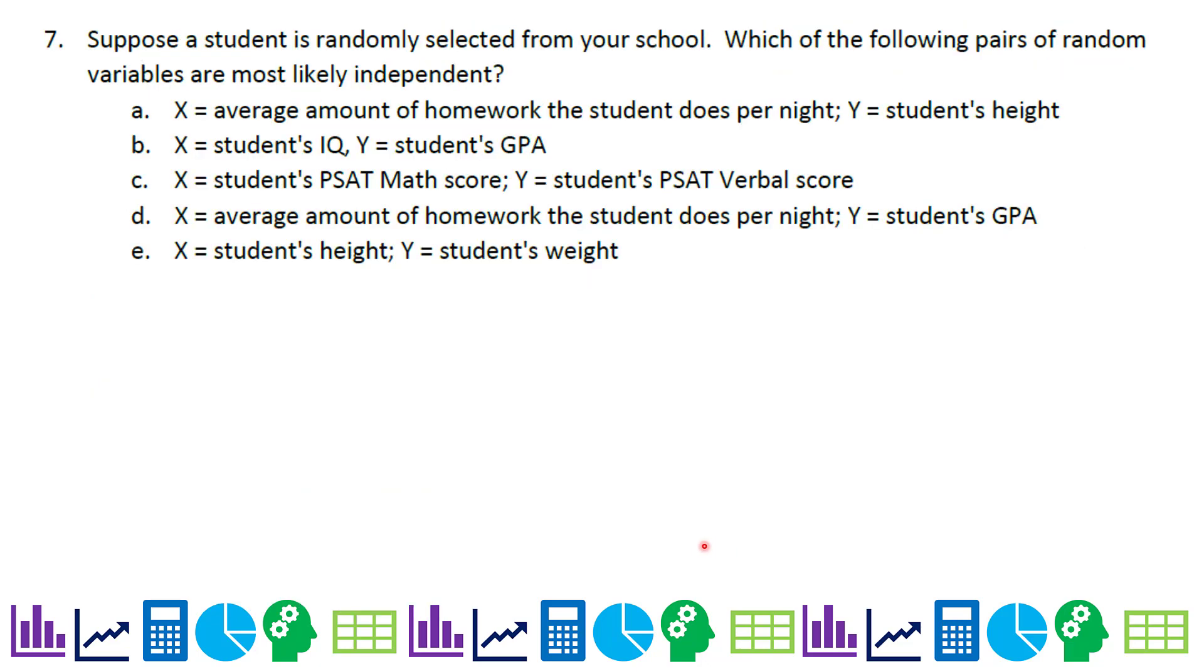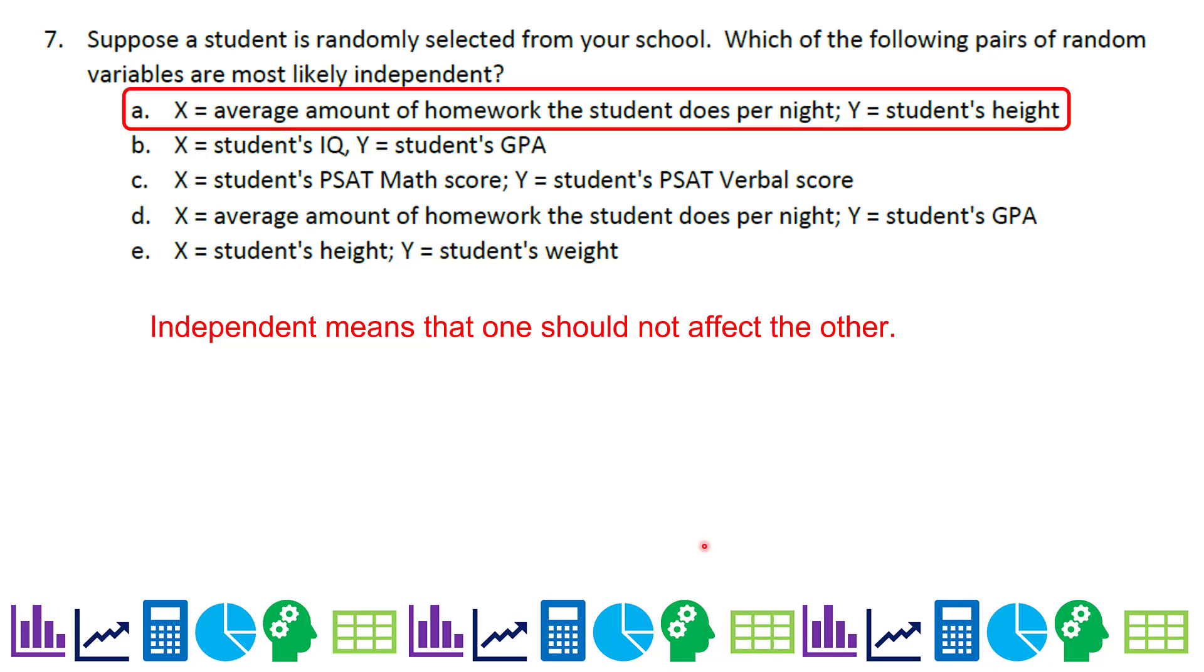On to number seven. Suppose a student is randomly selected from your school. Which of the following pairs of random variables are most likely independent? Independent means that one should not affect the other. IQ and GPA makes sense. PSAT verbal and math are probably linked. The average amount of homework the student does per night probably related to the GPA. A student's height is probably related to their weight. On the other hand, the average amount of homework the student does per night probably not related to the student's height. So those are most likely independent.